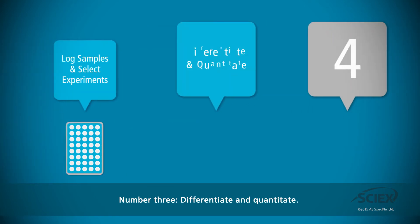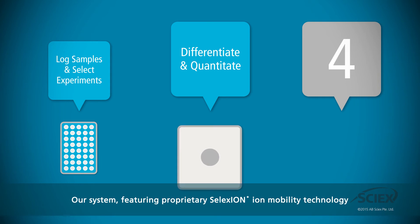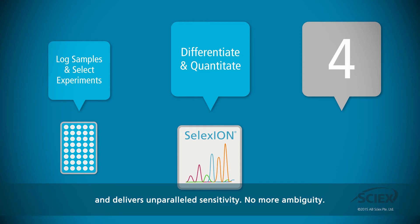Number three: differentiate and quantitate. Our system, featuring proprietary Selexion Ion mobility technology, performs separations across lipid classes, differentiates and quantifies over a thousand lipids accurately, and delivers unparalleled sensitivity.